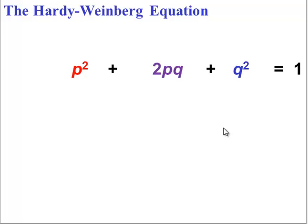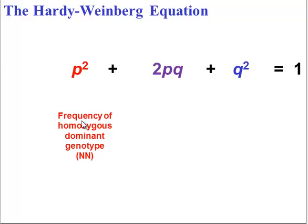p squared is really the frequency of the homozygous dominant genotypes. If p is the frequency of the dominant allele, the frequency of getting both dominant alleles is p times p, or p squared.